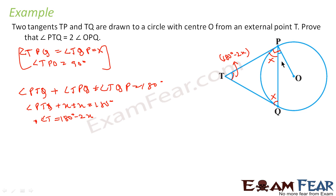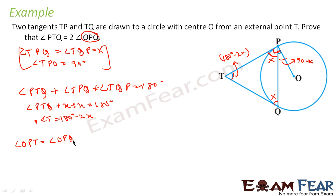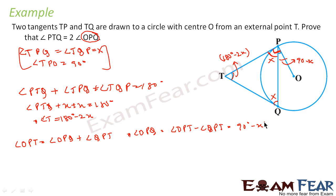Now let me find angle OPQ in terms of x. Angle TPQ is x and angle TPO is 90 degrees, so angle OPQ equals angle OPT minus angle QPT. That is 90 degrees minus x. Mathematically: angle OPT equals angle OPQ plus angle QPT, so angle OPQ equals angle OPT minus angle QPT, which is 90 degrees minus x.